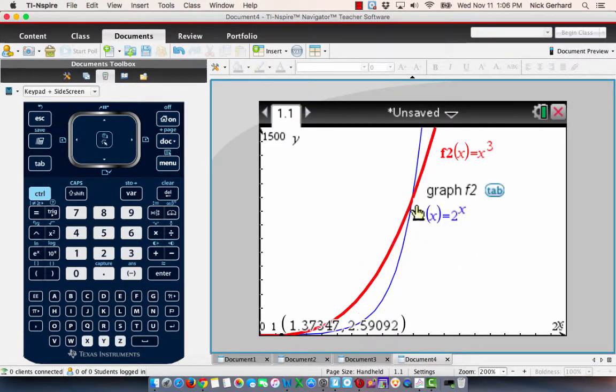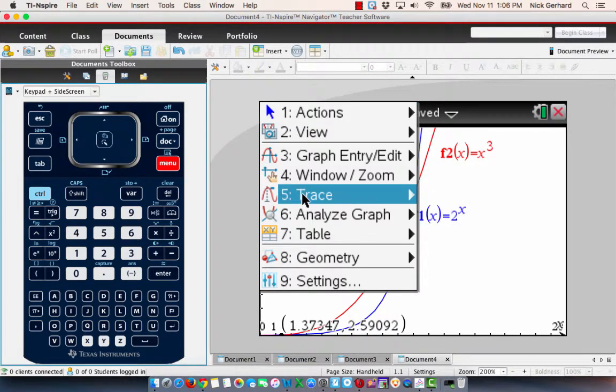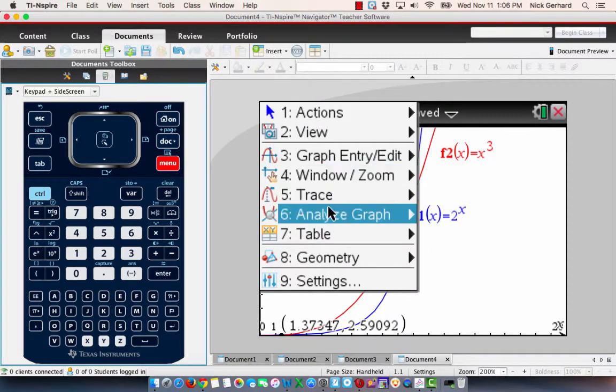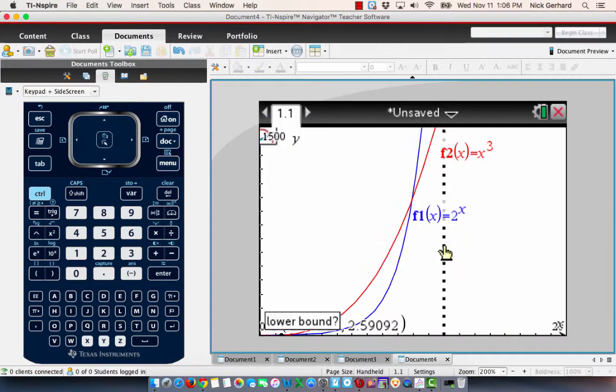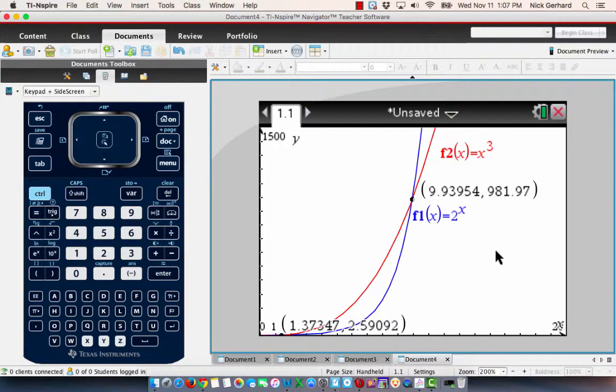And when I do that, now I can see that they intersect again here and then 2 to the x is bigger again. So, let's go ahead and find that intersection point, analyze graph, intersection, left bound, right bound. And, now, when x is bigger than 9.940 by round, 2 to the x is bigger.